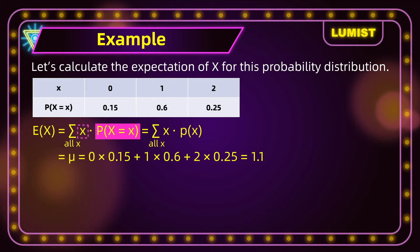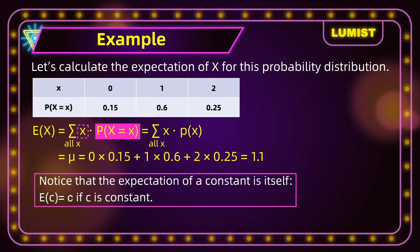So although the random variable x takes values 0, 1, or 2, we expect x to be 1.1. Notice that the expectation of a constant is itself — the expectation of a constant c is equal to c.